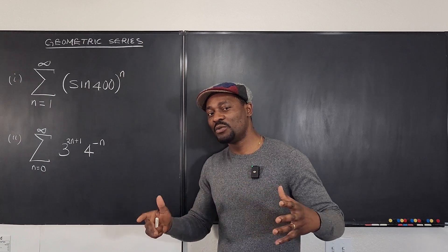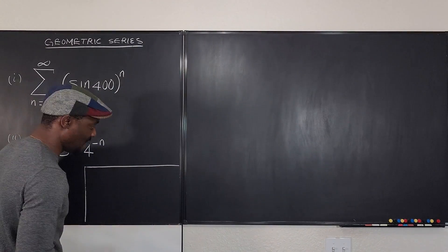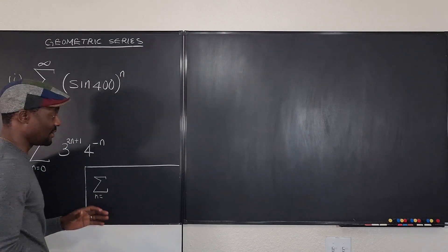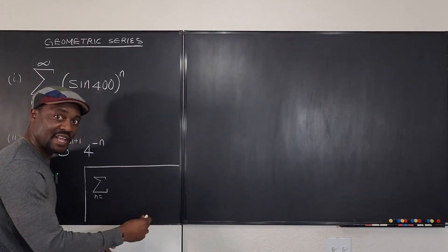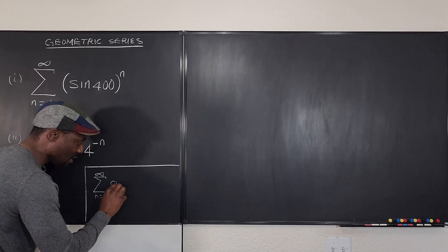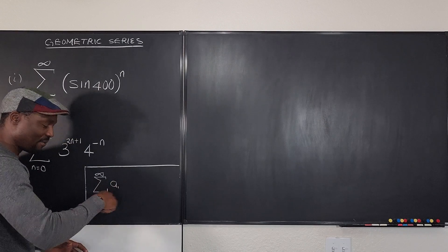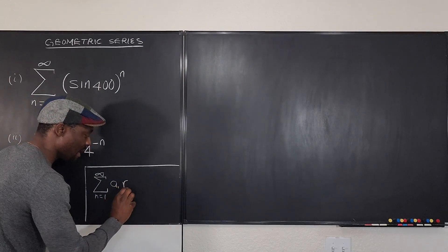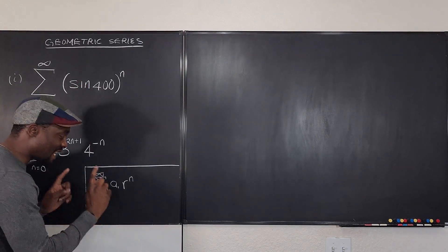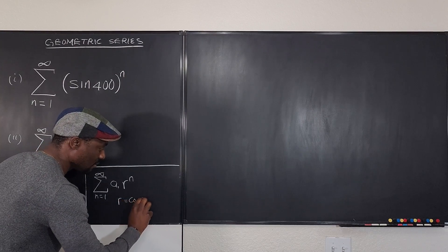Let us write first what the general appearance of a geometric series is. A geometric series generally looks like this: it is the sum from n equals — it could be zero or one or whatever, depending on the expression, as long as it doesn't create a problem initially. You're going to have two terms: the first term a sub one, multiplied by the common ratio, which is the term raised to n.